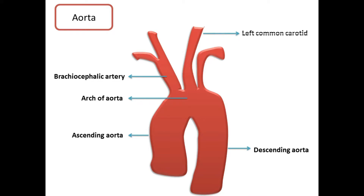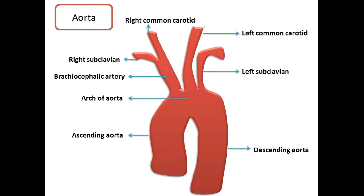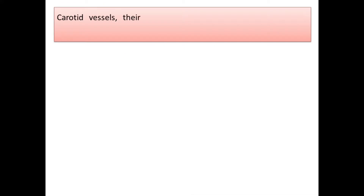The arch of aorta gives off branches like the brachiocephalic artery, the left common carotid artery, and the left subclavian artery. The brachiocephalic artery further divides into the right subclavian and the right common carotid. So the right common carotid arises from the brachiocephalic artery, whereas the left common carotid artery arises directly from the arch of aorta.